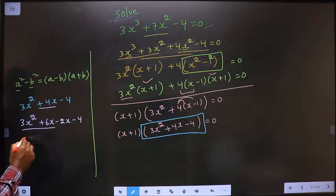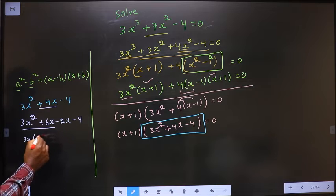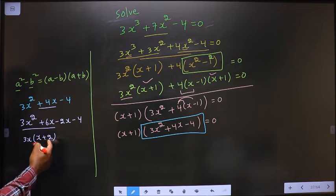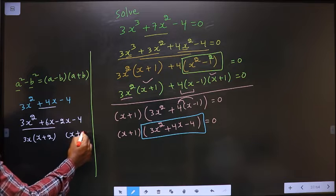So now from these two, take out 3x common. I get x + 2. Here you got x + 2. So here also it should be x + 2.